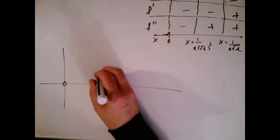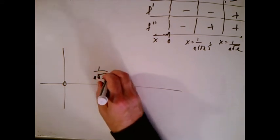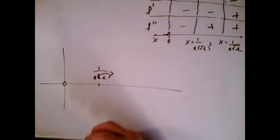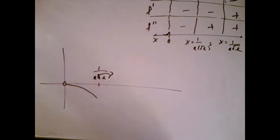I know that at one over a square root of e cubed like this, the graph needs to look until that point, going down, concave down, so I'm going to draw something going down, concave down like that.